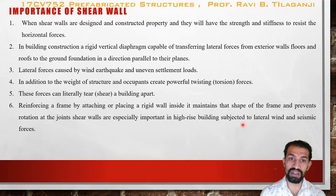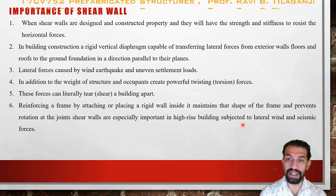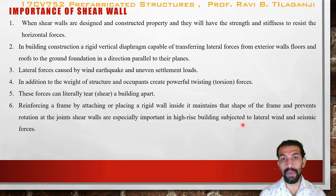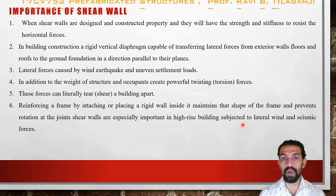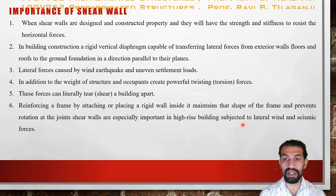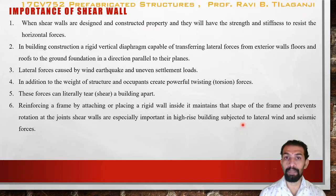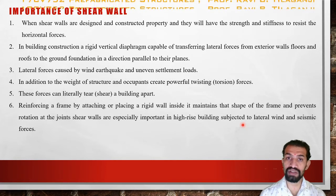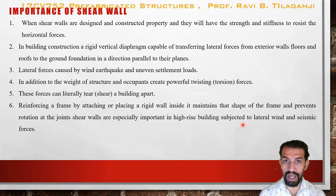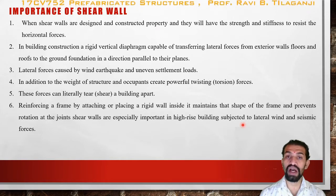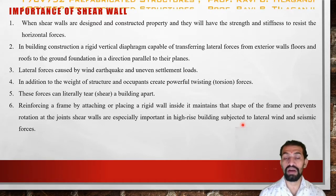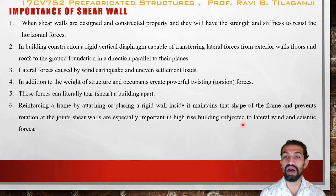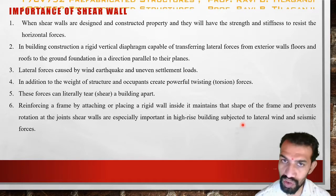In tall buildings, shear walls act as a reinforced component because normal walls are not sufficient. External walls constructed with RCC — such as in the construction of a water tank built from ground to top as a whole reinforced structure — are built because lateral loads in that area are too much. Lateral forces are caused by wind, earthquake, and uneven settlement loads.